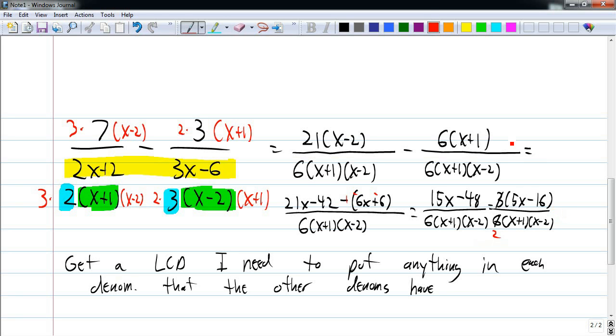So, I have 5x minus 16 over 2 times x plus 1 times x minus 2. So, there's a lot of algebraic manipulation going on here, but here's the principle of my LCD.